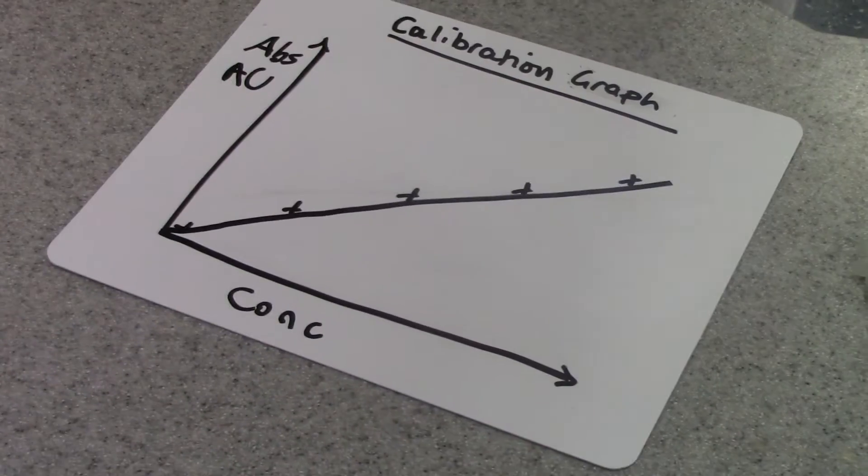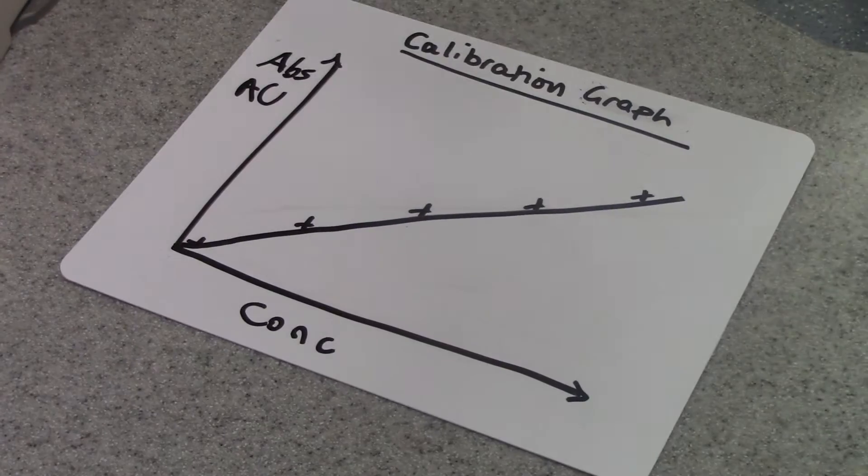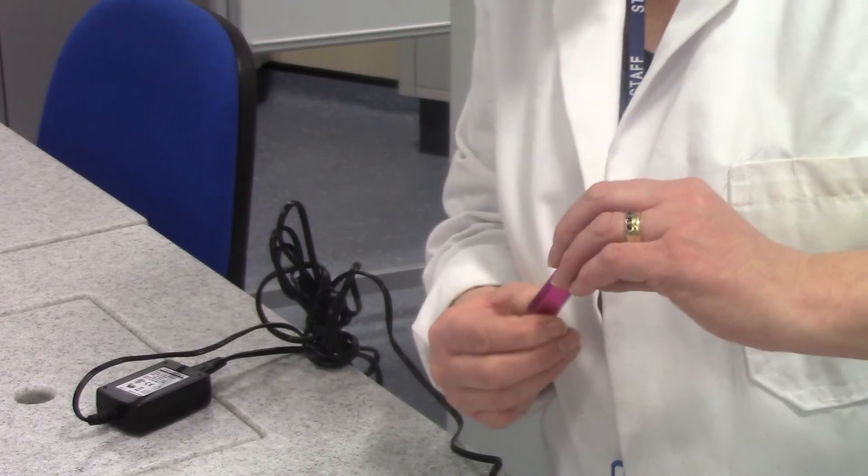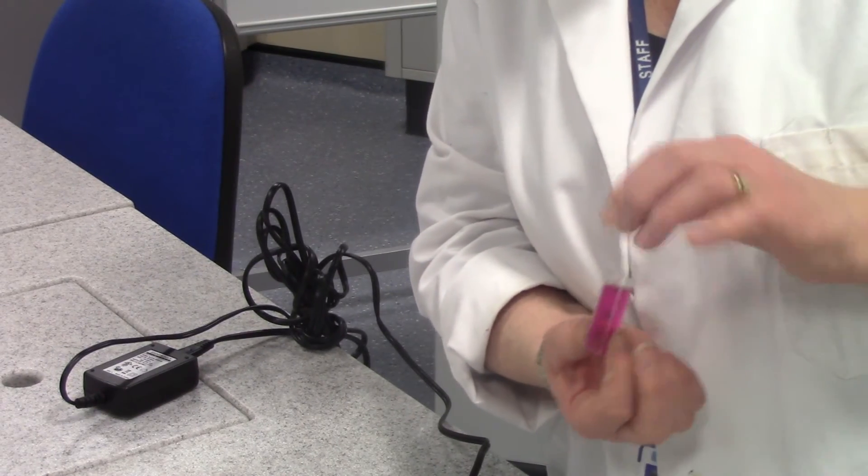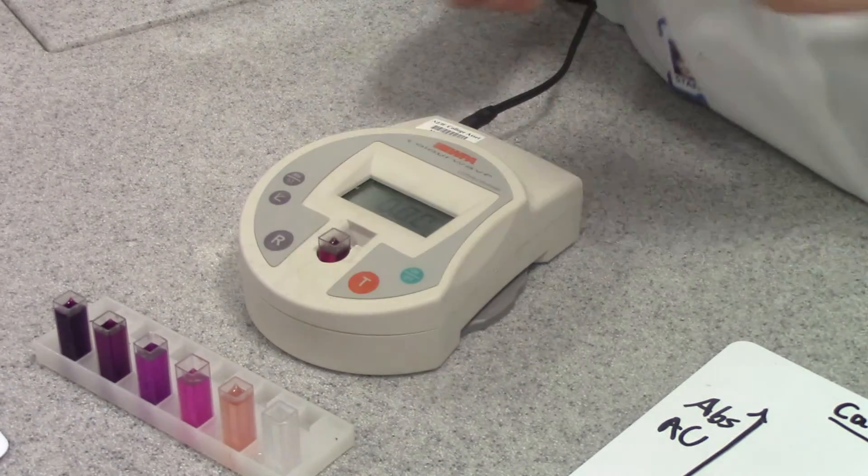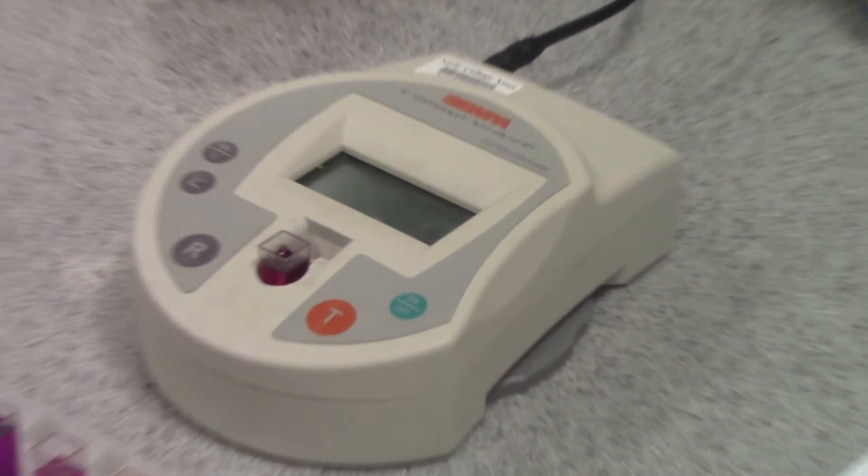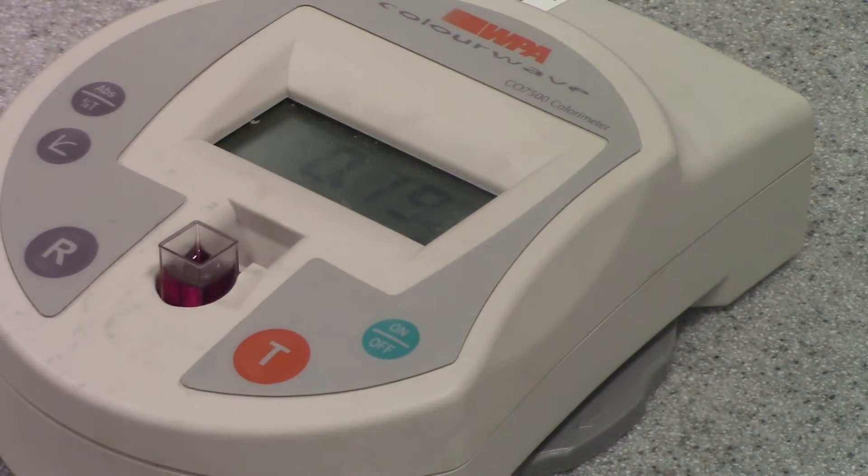I'm now ready to determine the concentration of my unknown solution, which I have here. Checking that I don't handle it by the clear sides, I put it with the V facing away from me and I press T. And this gives me an absorbance value.